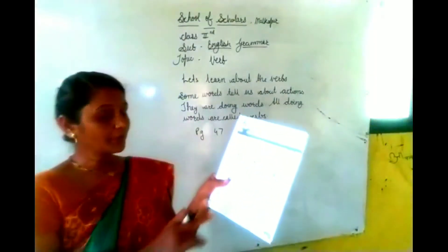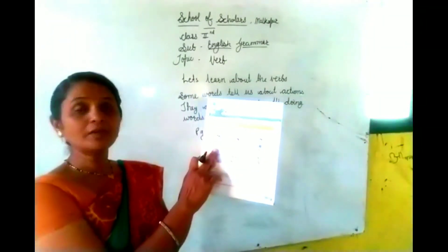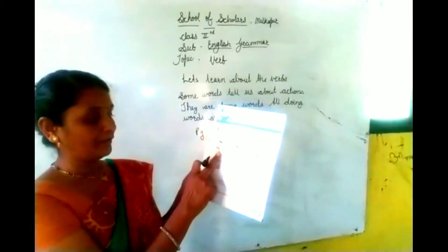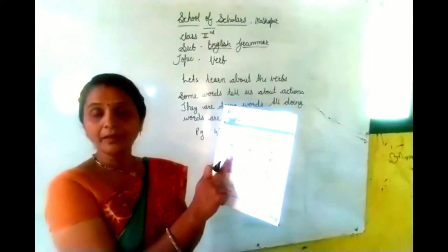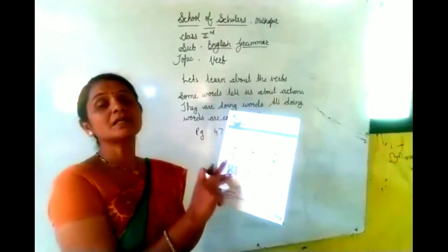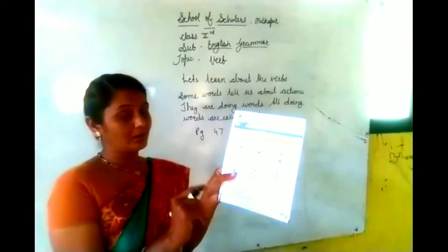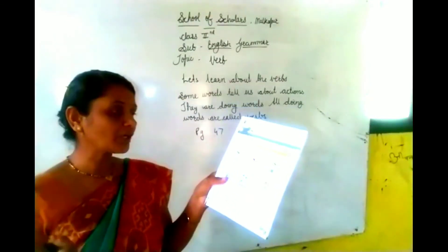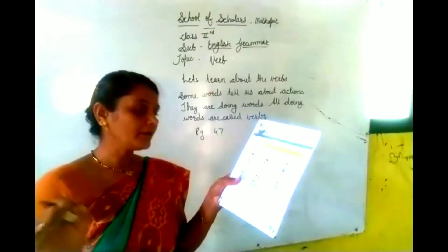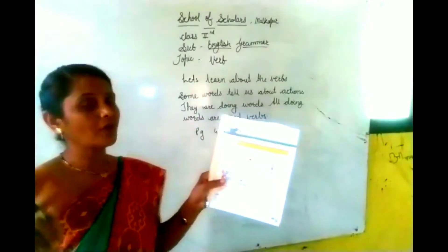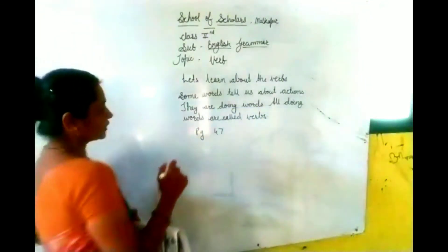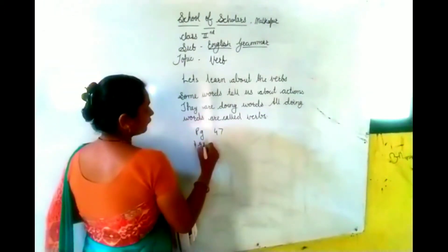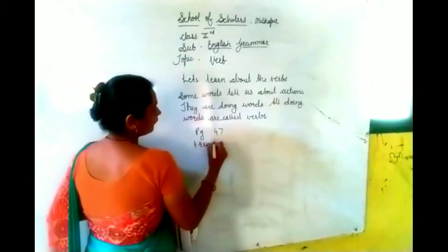What is the first picture showing? The first picture is showing run. Run is the action of the girl. So: Usha runs very fast.